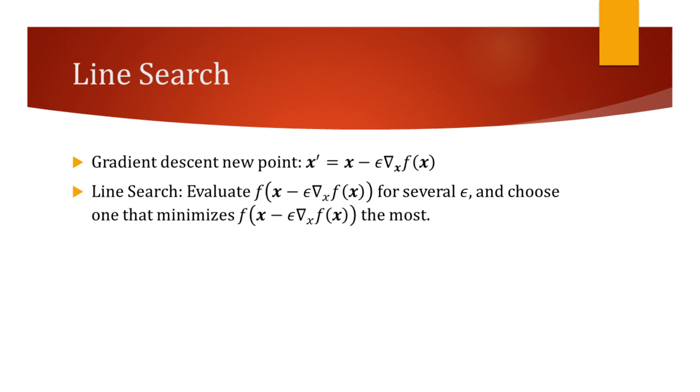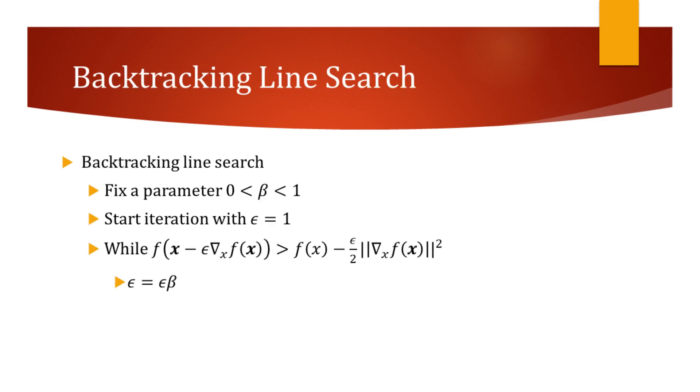We shall now consider the backtracking line search, one of the most basic and popular of these methods. Backtracking line search starts by selecting a value for beta in range from 0 to 1. This parameter determines by how much we update the learning rate at each iteration.